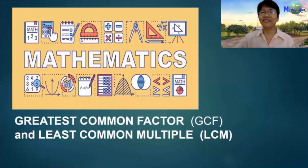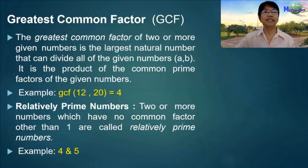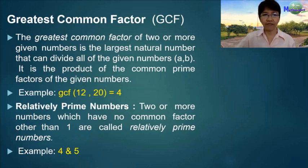Hello everyone, this is Mathematics Alive. Today's lesson is the Greatest Common Factor and Least Common Multiple. The greatest common factor of two or more given numbers is the largest natural number that can divide all of the given numbers A and B. It is the product of the common prime factors of the given numbers.